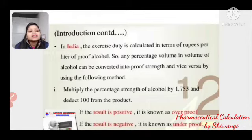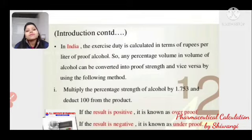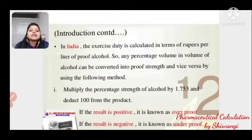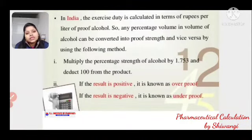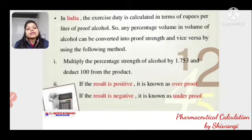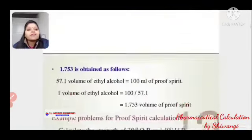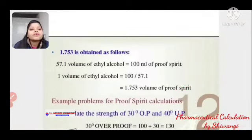Multiply the percentage strength of alcohol by 1.753 and deduct 100 from the product. If the result is positive, it is known as over proof. If the result is negative, it is known as under proof.